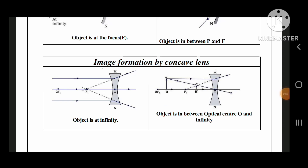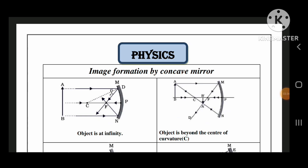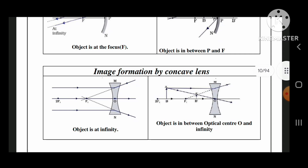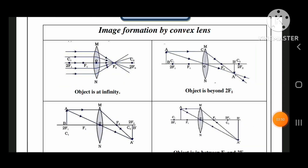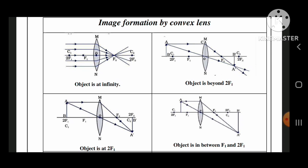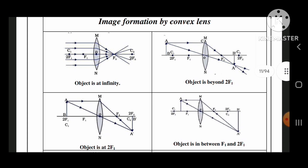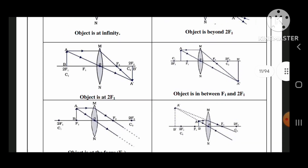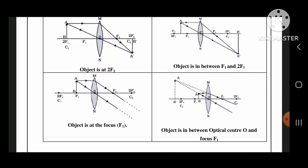Image formation by concave lens. Until now we have seen image formation by the concave mirror. Now image formation by the concave lens: object is at infinity; object is in between the optical center O and infinity. Next, image formation by the convex lens: object is at infinity; object is beyond 2F1; object is at 2F1; object is in between F1 and 2F1; object is at the focus; object is in between the optical center O and the focus F1.